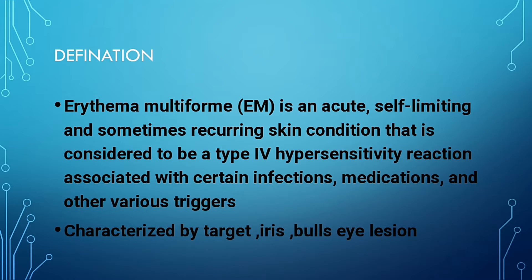Acute condition means it arises suddenly. Self-limiting means it appears and also disappears on its own. It is a type 4 hypersensitivity reaction — a delayed-type reaction — where there is infiltration of lymphocytes, plasma cells, and macrophages, triggered by certain infections, medications, and other various factors.